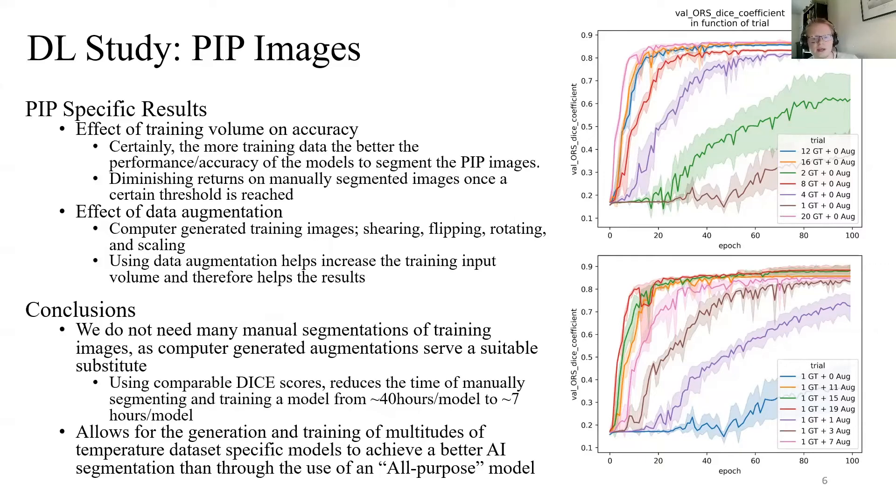Each augmentation, as the image is considered sufficiently changed, is like adding a unique image to the input training volume, and so our results for one ground truth plus however many augmentations look incredibly similar to the one or multiple ground truth graph.